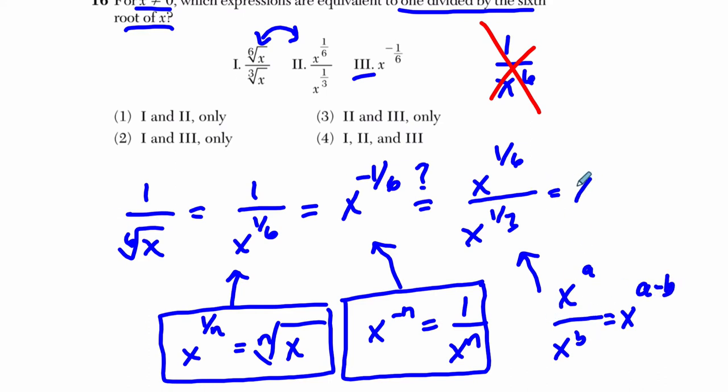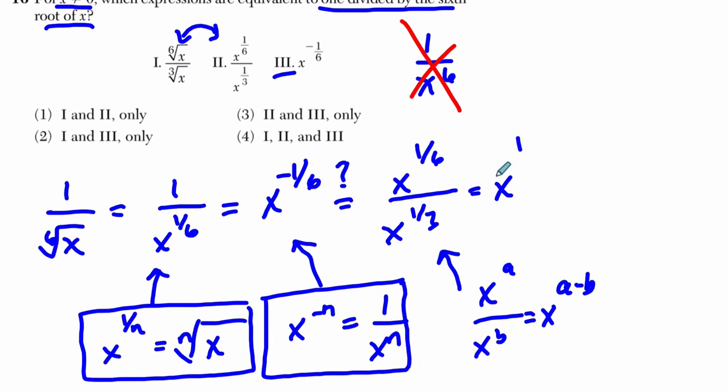So here, this would have to equal x to the 1/6th minus 1/3rd, which is 2/6ths. And what's 1/6th minus 2/6ths? Well, that equals x to the negative 1/6th. 1 minus 2 is negative 1.